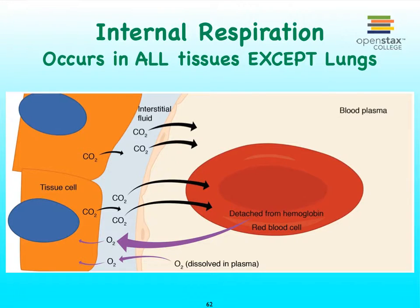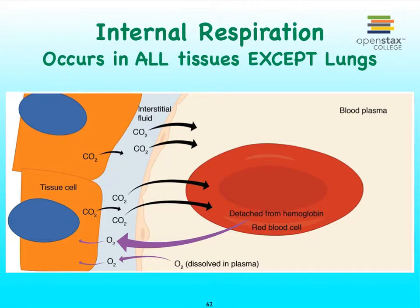The gas exchange that we see in all of the tissues except between capillaries and alveoli is going to be referred to as internal respiration. In the case of internal respiration, the gas exchange is opposite from what we saw in external respiration. This time carbon dioxide is going to be picked up by the blood, and the blood is going to deliver oxygen to the tissues.